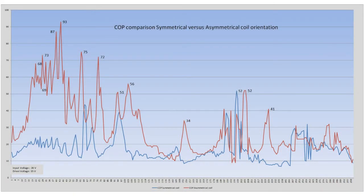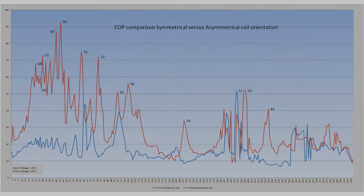Here you can see the COP values between the symmetrical and asymmetrical coil. The symmetrical is displayed in blue; the red line is asymmetrical. That becomes very obvious now, and I have marked a couple of spikes in COP. Interestingly, the value of 52 — which appeared on the asymmetrical coil — appears here as well at almost the same frequency. But in the first 100 kHz, it dominates clearly on the asymmetrical side, with many spikes far above what the symmetrical coil can deliver. That concludes my introduction, and should give you a good indication of what to do next when you build your new coil system. Thank you.